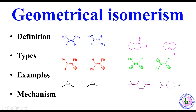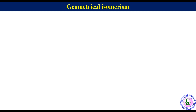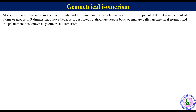Hello and welcome to my YouTube channel Chemviz. In this video we are going to discuss geometrical isomerism, which is a type of stereoisomerism. Molecules having the same molecular formula and the same connectivity between atoms or groups but different arrangement of atoms or groups in three-dimensional space, because of restricted rotation due to a double bond or ring, are called geometrical isomers, and the phenomenon is known as geometrical isomerism.